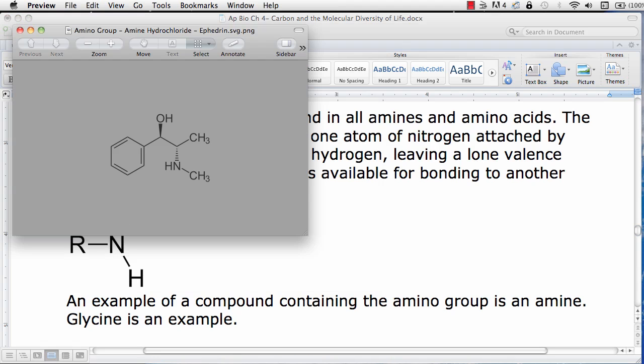Also, ephedrine, which is an appetite suppressant, is an example of a compound containing an amine or an amino group. Here we see ephedrine is essentially an amine hydrochloride.